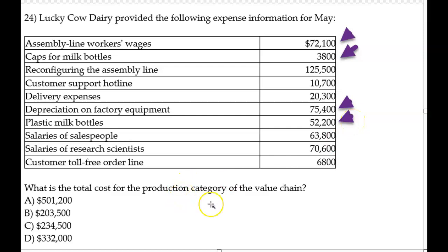When you do any value chain work, any problems like this, you want to keep those five categories in your head and have a pretty clear idea about what they mean. The answer here is 203,500.